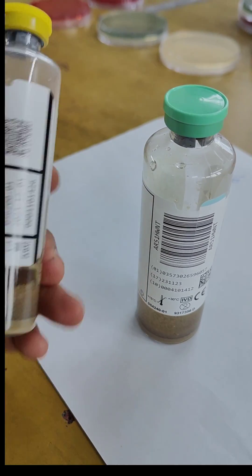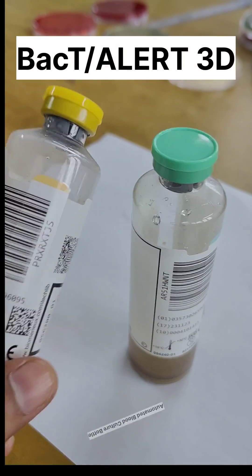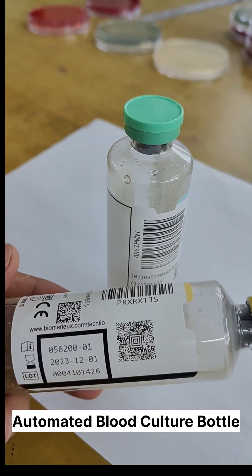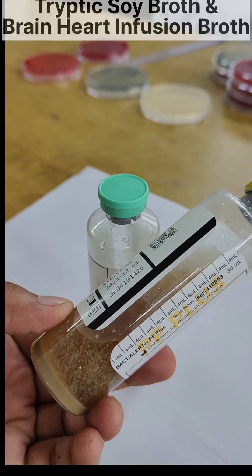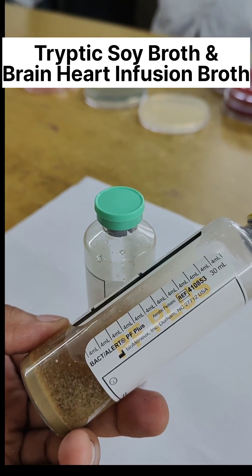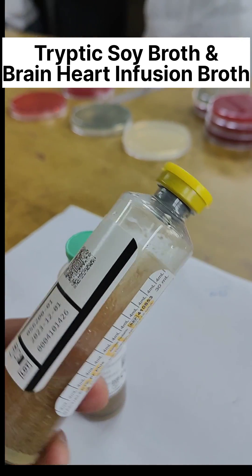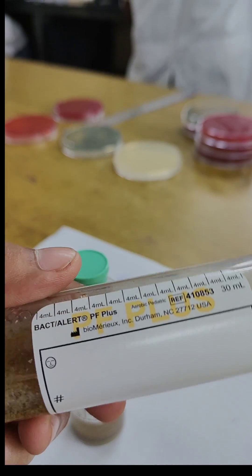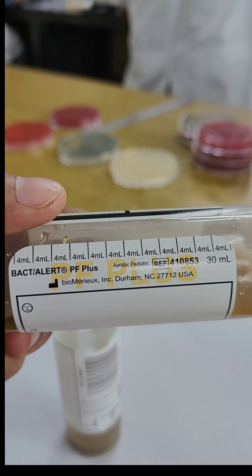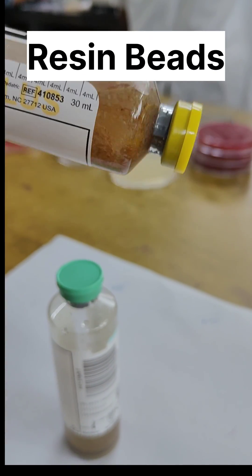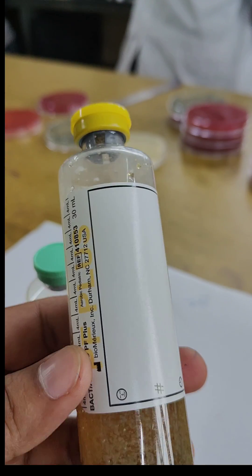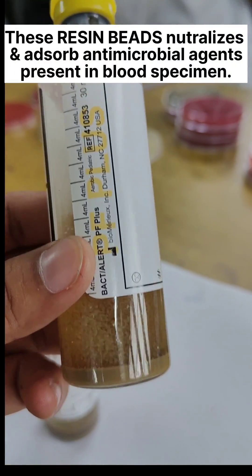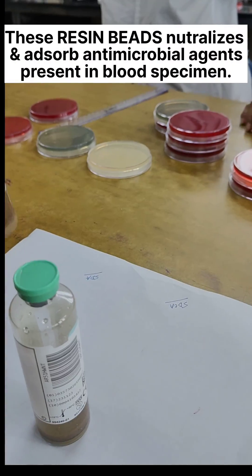These are BactiAlert automated blood culture bottles and the liquid medium inside this bottle is usually tryptic soy broth and brain heart infusion broth. In this liquid medium you can easily see that plenty of small absorbent polymeric beads are present which function to neutralize the antimicrobial agents present in blood specimens.